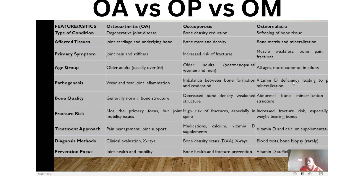Regarding bone quality: in osteoarthritis, bone quality is generally normal in structure. In osteoporosis, we have decreased bone density and a weakened structure. In osteomalacia, there is abnormal bone mineralization and structure.